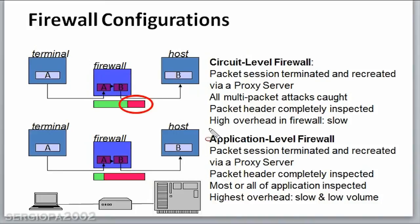Finally, we have application level firewalls. Application level firewalls are extremely similar to circuit level firewalls. Now, not only is the full data package header inspected, but almost the entire package gets inspected. The data itself that is contained and encapsulated in the package — data that normally contains things like HTML code, or data belonging to a specific application like a web page or email message — is also inspected by this type of firewall, which is why they are called application level firewalls.